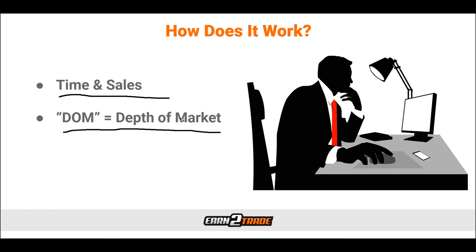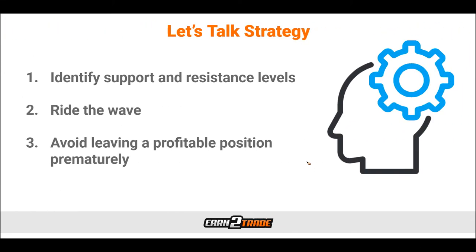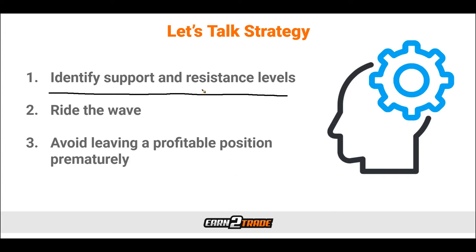The strategies that traders use while reading the tape generally fall under three styles. The first is identifying support and resistance levels. Traders will often look for large limit sell or buy orders in the order book of a particular asset across multiple trading venues. When such orders exist, the asset's price may be expected to experience strong resistance or support at that specific level. By applying this strategy, traders can get a sense of whether it's a good idea to trade the asset and where the price floor might stand, helping them estimate the associated risk and better plan their trading moves.